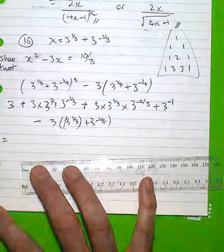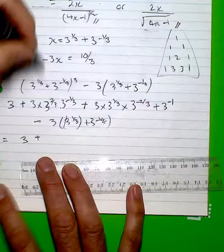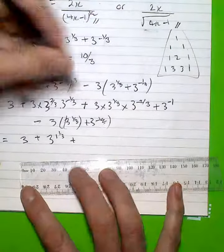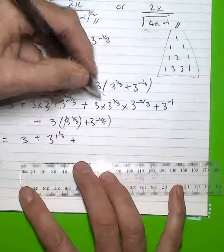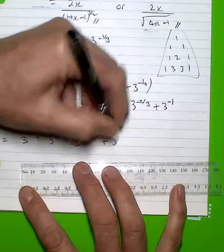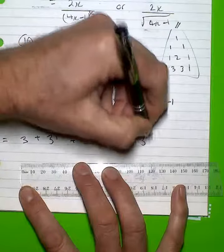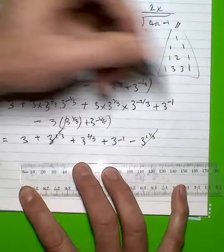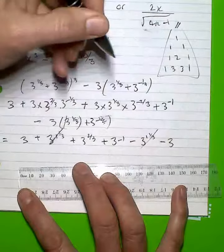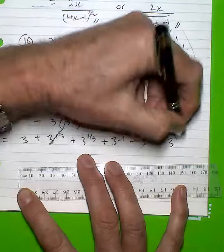And gathering all that together, I'll have 3 plus 3 to the 1 and 1 third, and the hope is that some of these cancel out. I'm going to have 3 to the 2 thirds plus 3 to the minus 1 minus 3 to the 1 and 1 third. So you already see a cancellation.